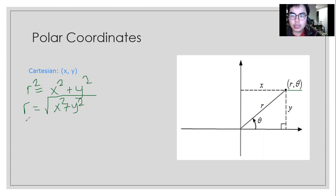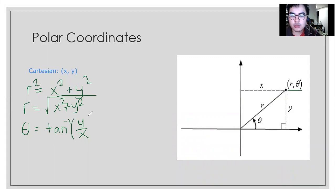In order to find the angle, which is theta, what we're going to do is divide Y by X. Then we're going to use the inverse of the tangent on this quotient. Why Y over X? It's because it is opposite over adjacent — your Y is the opposite and your X is the adjacent.